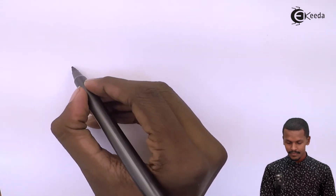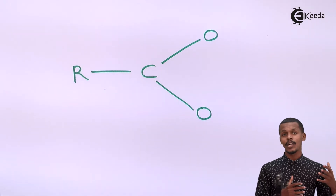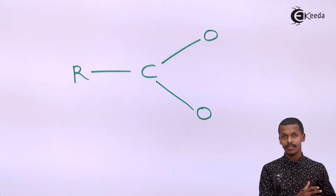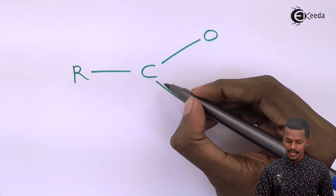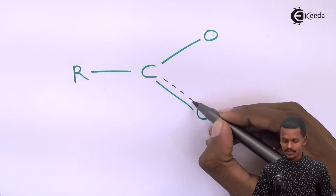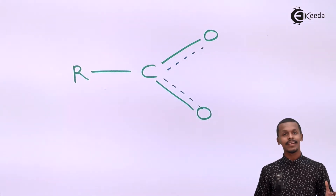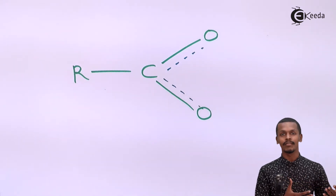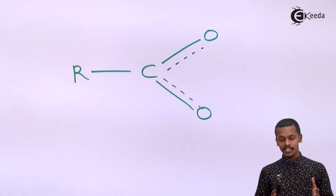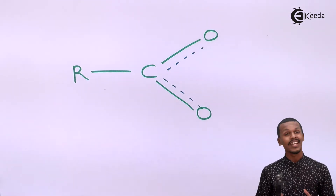Since neither resonating structure is sufficiently stable on its own, we approach a new, more stable structure. Because of electron delocalization, we cannot predict on which oxygen the electron resides, so we represent the bonds with dotted lines. This dotted line indicates electrons are not fixed in one place — they are shifting and delocalizing. This structure is known as the resonance hybrid.